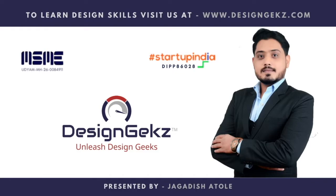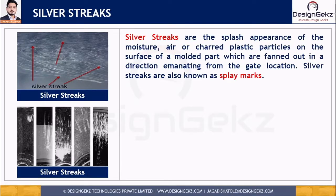Silver streaks are the splash appearance of moisture, air, or plastic particles on the surface of your molded part, which are fanned out in a direction emanating from the gate locations. These silver streaks are also called splay marks.